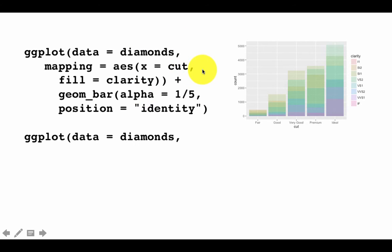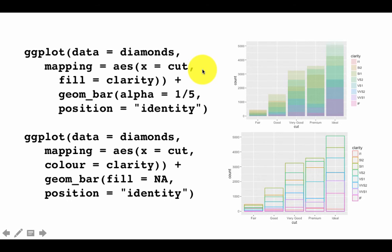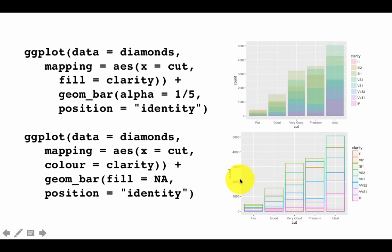If you don't like the overlapping from position equals identity, one good idea is to use identity but with fill equals NA — no fill color — so there is no overlapping issue. You then get an outline of each bar without color fill. Still not a great chart and it takes a lot of effort to make sense of it, but I'm using this to illustrate position. Fill equals NA basically says draw the bar but don't fill it with any color.